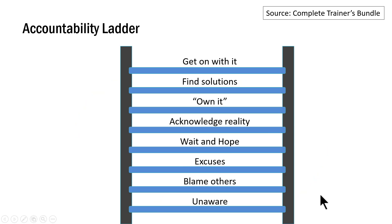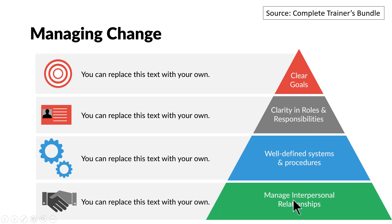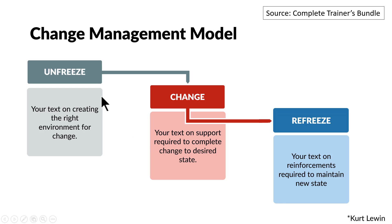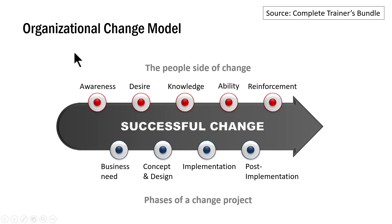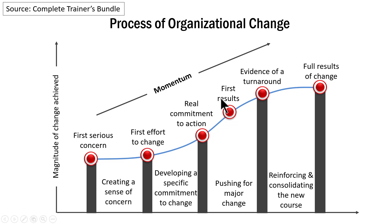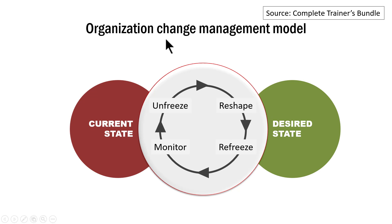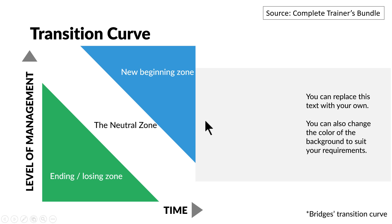This is the accountability ladder, also one of the change management models, showing how a person moves through the various stages of change. There is also a managing change pyramid model, and Kurt Lewin's model shown in flat design style. Here is an S-curve model of change showing the various stages, and an organizational change model where the various stages of change are clearly shown. This is another way of showing organizational change, going from current state to desired state and what happens in the intermediate stage. Finally, this is the Bridges transition curve showing the various zones in change management.